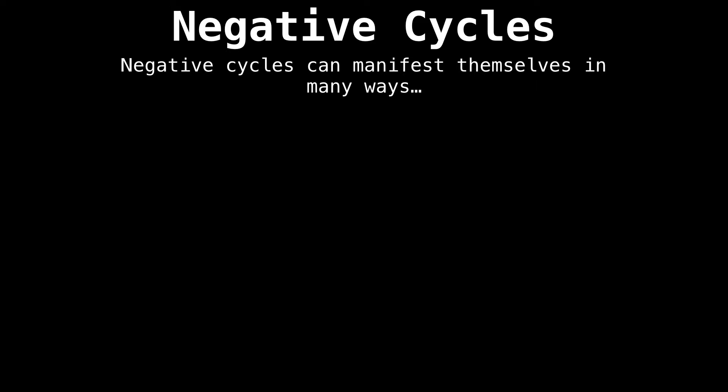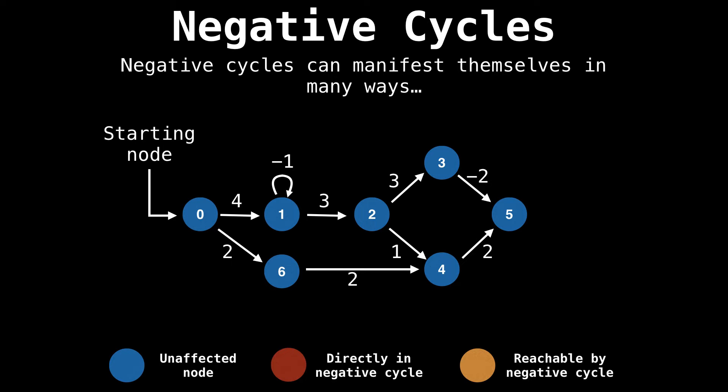Let's look at how negative cycles can arise because this seems important. Here is a graph I made with directed edges, some of which are negative. I've labeled our starting node to be node zero, and our goal would be to find the distance from zero to every other node in a single source shortest path context. But right now we are only interested in detecting negative cycles. I will label blue nodes as regular nodes, red nodes as nodes directly involved in a negative cycle, and yellow nodes as those reachable by a negative cycle. One way negative cycles can emerge is through negative self loops.